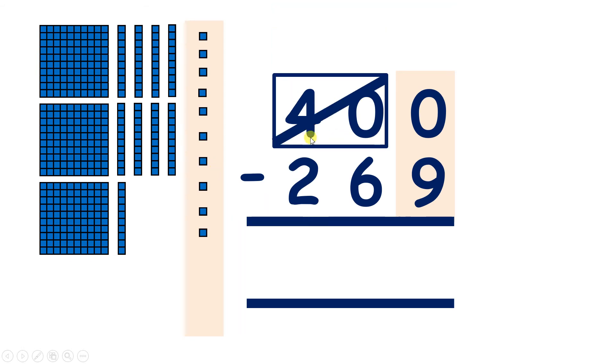So we can change 40. If we put a rectangle around 40, we can cross that out and change it to 39. And now we have 10 units. So we can do 10 subtract 9 is 1.